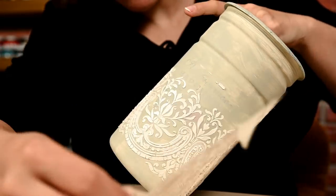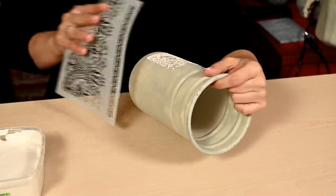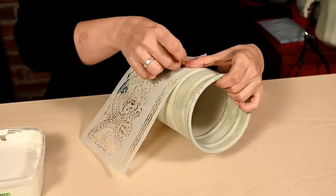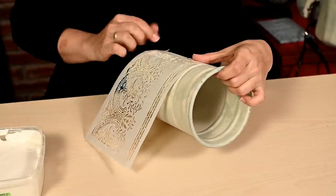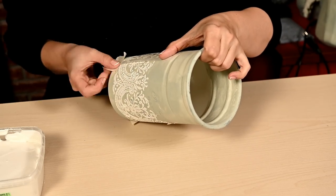After the stencil is filled I'm removing it right away, very carefully in order not to smudge the pattern. I let it dry and then I'm attaching the stencil again to finish the pattern on the other side of the canister. The pattern almost matched in the end, I was lucky.